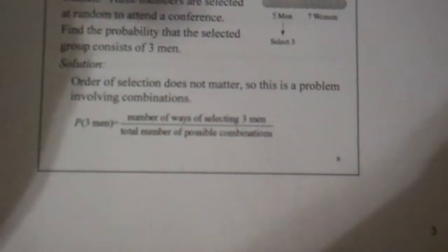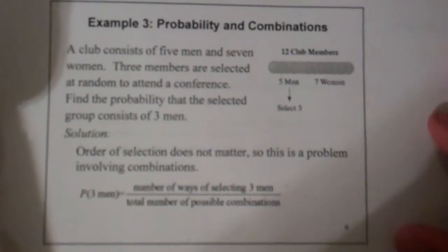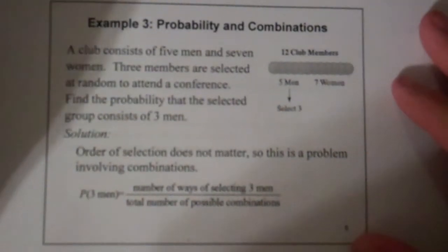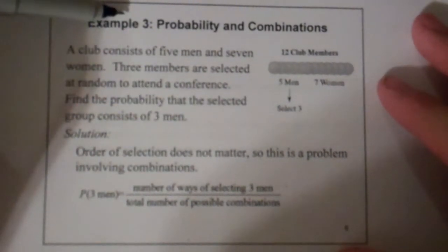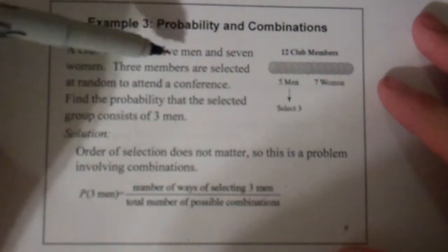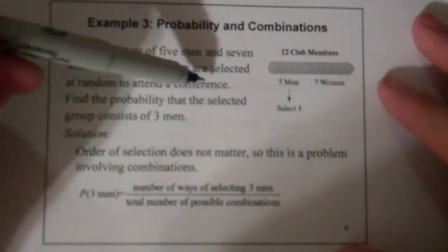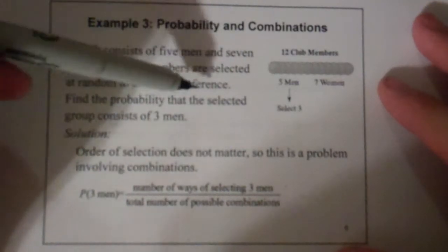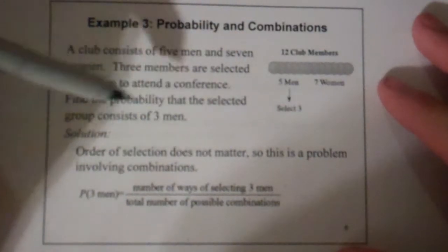I don't know what those chances are. It would depend on how many tickets were sold, but if you don't sell the full amount. Moving on to example three. A club consists of five men and seven women. Three members are selected at random to attend a conference. Find the probability that the selected group consists of three men.